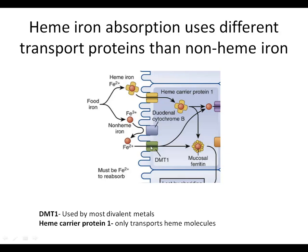DMT1 stands for divalent metal transporter 1. It is a transport protein that will bring across the membrane any of a number of divalent metals — namely, in addition to iron, it will also bring in copper and cadmium, which we don't want. Cadmium is bad. So this transporter can get outcompeted by other divalent metals in the diet, and that is one reason why iron in inorganic form is absorbed less efficiently — because of competition.